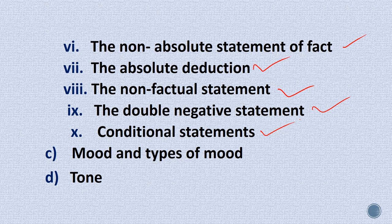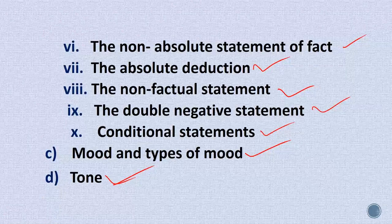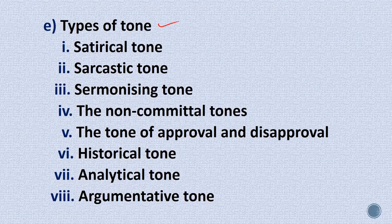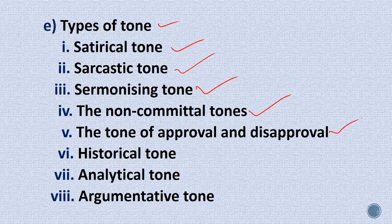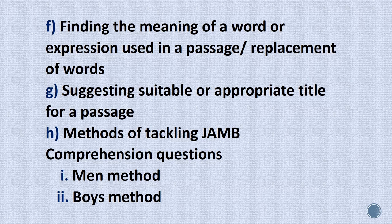Once we are done with the various types of statements, the next thing we look at is mood and the types of mood. A pivotal aspect of mood is tone — we'll discuss tone and its types: satiric, sarcastic, harmonizing, non-committal, approval and disapproval, historical, analytical, and argumentative tone. Then we look at finding the meaning of a word or expression as used in the passage, which I call the replacement of words.